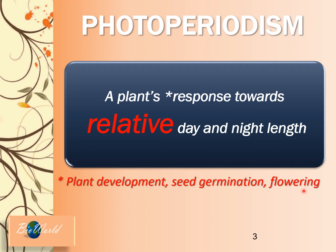In my previous videos I introduced the role of hormones in each of these processes. For example, for positive development of the plant you have hormones like auxin, cytokinin, and gibberellin, but hormones like ethylene and abscisic acid will inhibit the development of the plant.